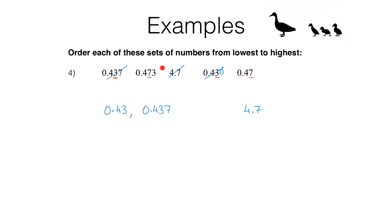Next we've got 0.473 and 0.47. They've both got a 7 in the hundredths column, so we've got to look at the next one along. We've got three thousandths for 0.473 and no thousandths for 0.47 — remember we could put a zero on the end just to make it easier to compare. So that means 0.47 (or 0.470) is the smaller of those two numbers. So there we have it — all of those numbers listed in order.